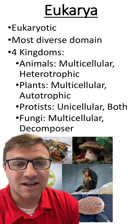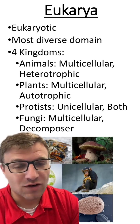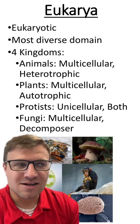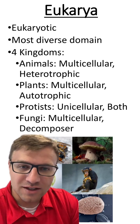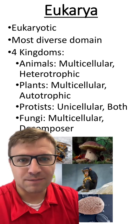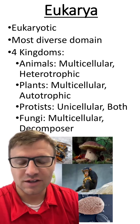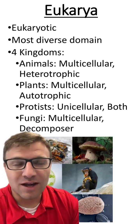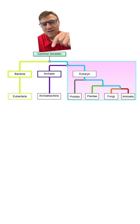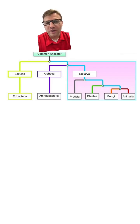Animals, which are multicellular and heterotrophic. Plants, which are multicellular and autotrophic. Protists, which are unicellular and can be either autotrophic or heterotrophic. And fungi, which are multicellular and usually decomposers.